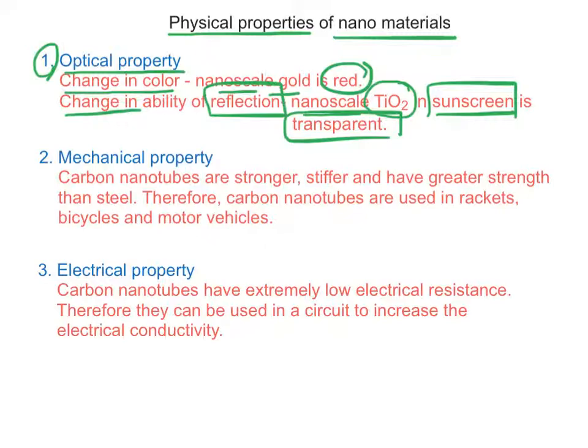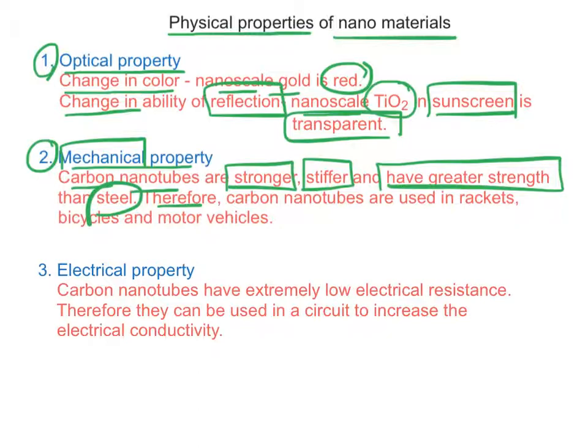Next, mechanical properties. Carbon nanotubes are stronger, stiffer, and have greater strength than steel. Therefore carbon nanotubes are used in rackets, bicycles and motor vehicles to make them stronger, stiffer and have greater strength.